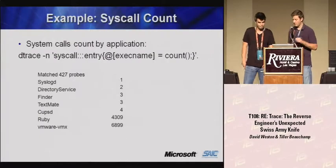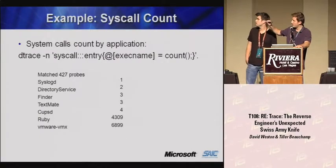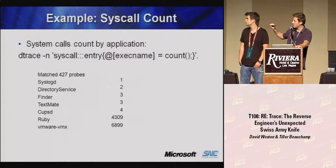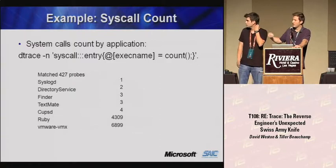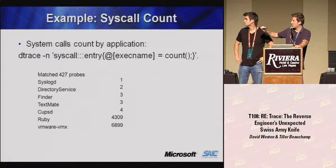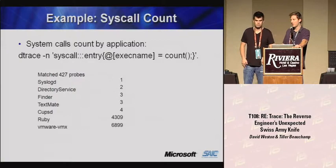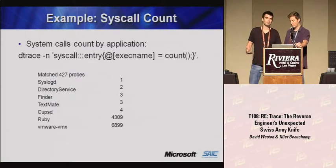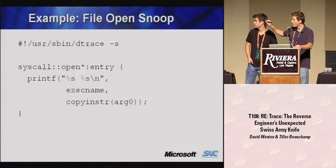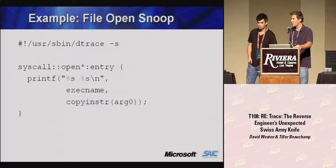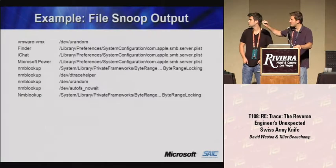Here's a one-line DTrace script with a probe definition and an action. It traces every application across the system, recording the number of times each makes a system call. Output shows Syslog made one system call, CUPSD made four, and VMware made almost 7,000. Another example hooks every open syscall entry point and prints the executable name and the first parameter — the file being opened. Output shows Finder opening a plist file, VMware opening /dev/urandom, and so on.